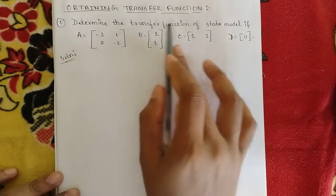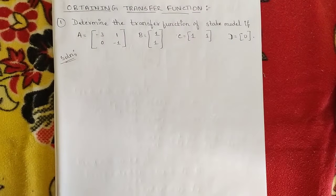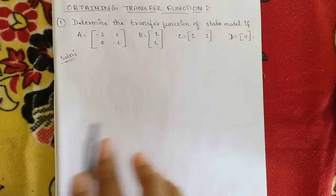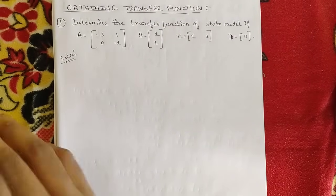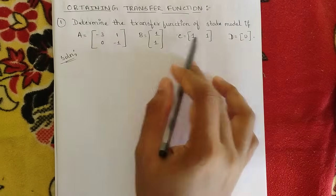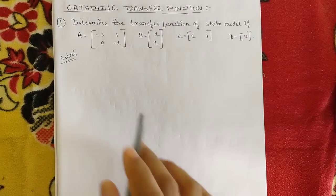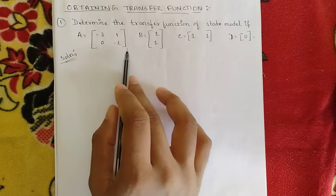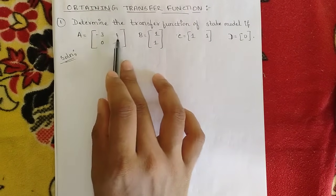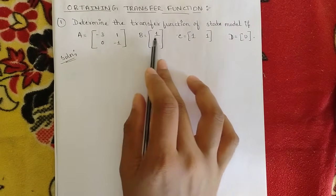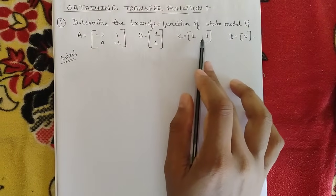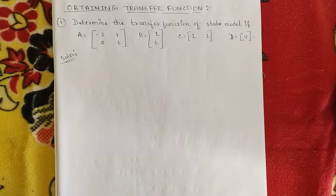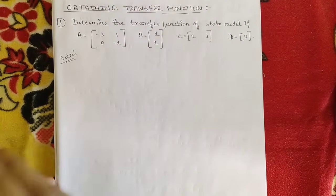Now let us start. Question one: determine the transfer function of the given state model. For the state equation and output equation we have four matrices — A, B, C, D. Matrix A is a 2×2 matrix with values: [-3, 1; 0, -1]. Matrix B is a column matrix [1; 1]. Matrix C is a row matrix [1, 1], and D is equal to zero.